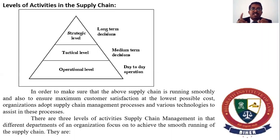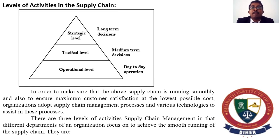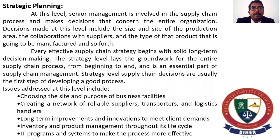Levels of activities in the supply chain: strategic level involves long-term decisions; tactical level involves medium-term decisions; and operational level covers day-to-day operations. To ensure the supply chain runs smoothly, maximizes customer satisfaction, and keeps costs as low as possible, there are three levels of management. At the strategic level, senior management is involved in making decisions that concern the organization — collaborating with suppliers, determining what products should be manufactured, and laying the groundwork for the entire supply chain process.